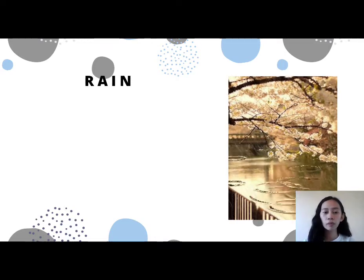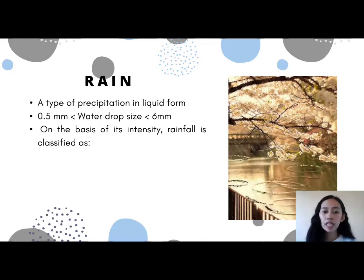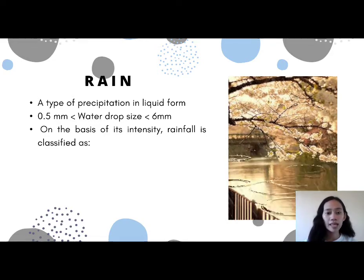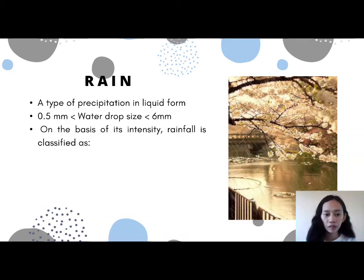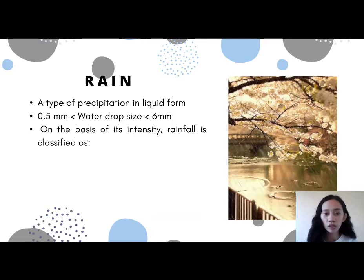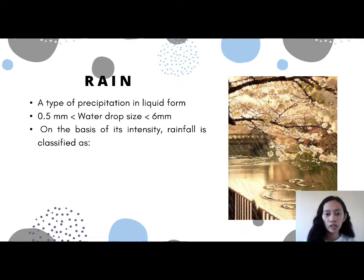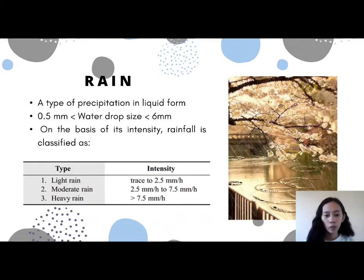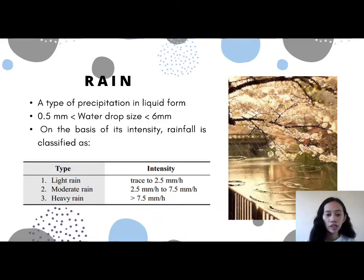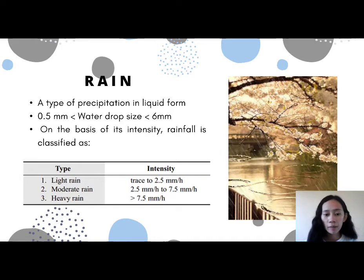The first form of precipitation is rain. It is a type of precipitation in liquid form. Rain has a water drop size of less than 6 mm and greater than 0.5 mm. Any drop larger than the stated size tends to break up into drops of smaller size during its fall from the clouds. On the basis of intensity, rainfall intensity is defined as the ratio of the total amount of rain falling during a given period to the duration of that period. It is expressed in depth units per unit time, usually as mm per hour. Rainfall is classified as light rain with intensity less than 2.5 mm per hour, moderate rain 2.5 to 7.5 mm per hour, and heavy rain greater than 7.5 mm per hour.